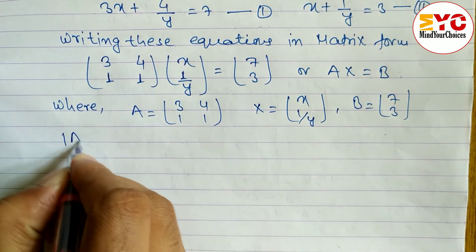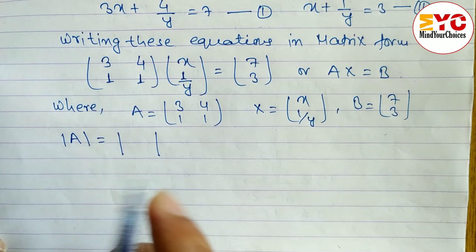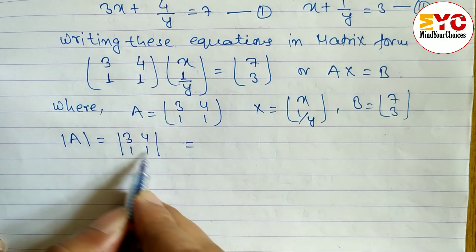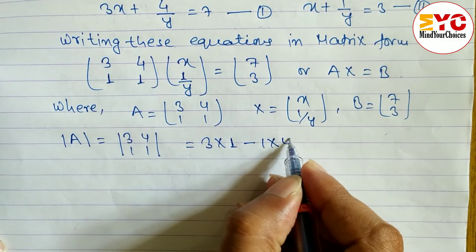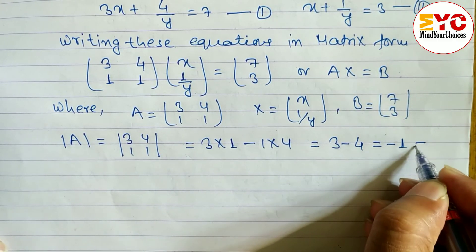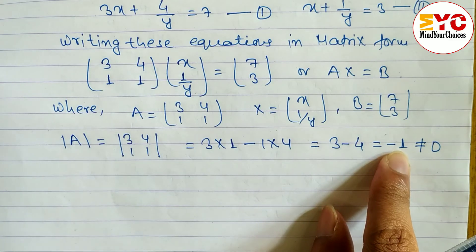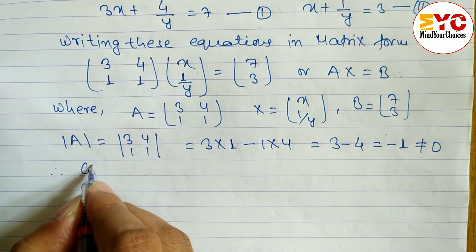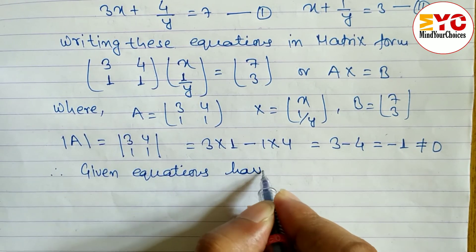Now we have to check whether matrix A is singular or non-singular by finding the determinant of A. Writing the elements inside two vertical lines: |A| = 3×1 minus 1×4 = 3 minus 4 = -1, which is not equal to 0. Therefore the given equations have a unique solution. If we had gotten 0, we could not find the value of x and y.